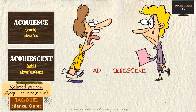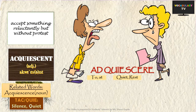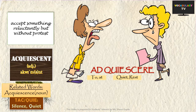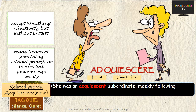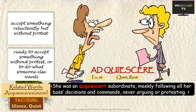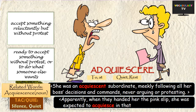One of the popular words that feature in most exams is ACQUIESCE, made up of the prefix 'ad' meaning 'to' and 'quiescere' meaning 'quiet'. So the word literally means to be quiet or silent, and it is generally used when you quietly accept something without objection, though inwardly you might be reluctant. A related word is ACQUIESCENT, used as an adjective to refer to a person ready to accept something without protest or to do what someone else wants. For example: she was an acquiescent subordinate, neatly following all her boss's decisions and commands, never arguing or protesting. When they handed her the pink slip, she was expected to acquiesce — that is, agree — in that unfavourable decision as well.